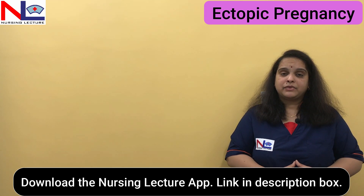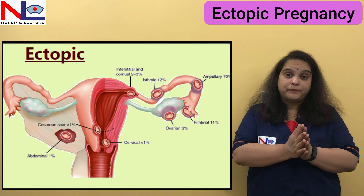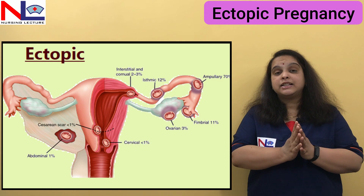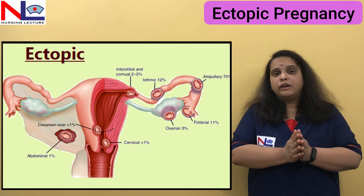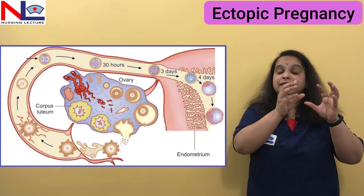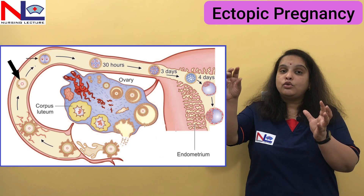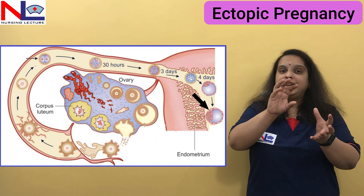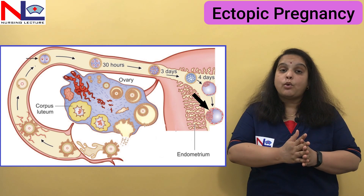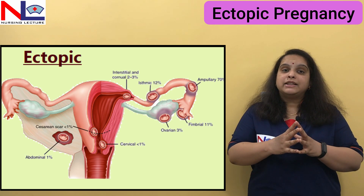What is ectopic pregnancy? When the fertilized zygote is not implanted in the normal endometrial uterine cavity and it is implanted outside the cavity or somewhere else, then this is called ectopic pregnancy. In normal pregnancy, the fertilization takes place in the ampullary part of the tube and from there it travels along the tube and enters the uterine cavity, where it gets embedded in the endometrial lining and grows. But here, this whole process doesn't take place and implantation occurs somewhere else.